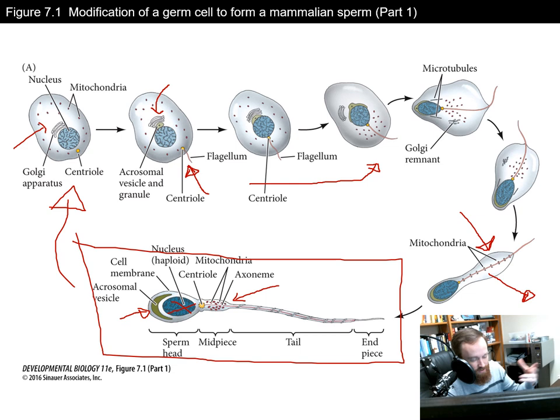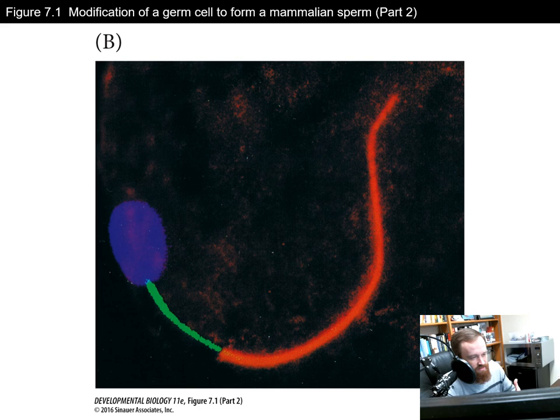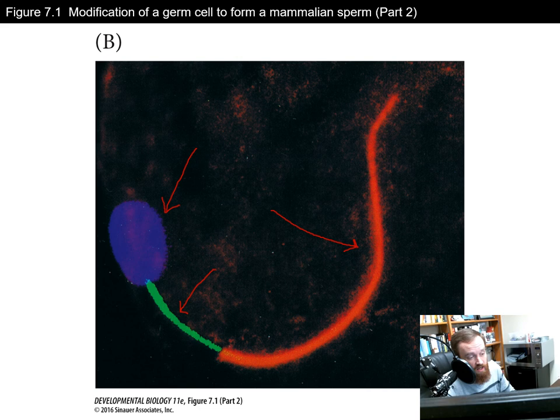Here we see a stained version of sperm. The blue DAPI stain labels the DNA, the green GFP tag marks the mitochondria in the neck of the sperm, and the red stain labels tubulin within the flagellum — the structural polymer that makes up the flagellum and allows locomotion.